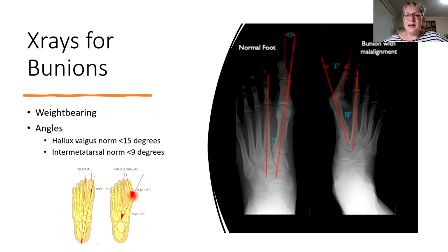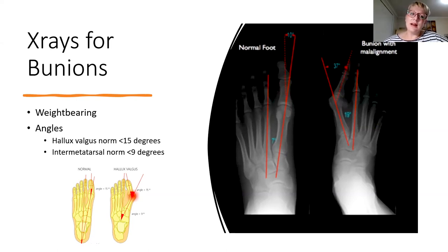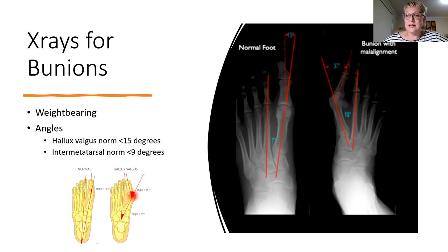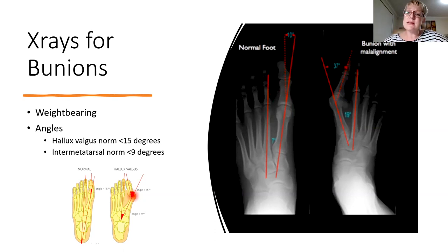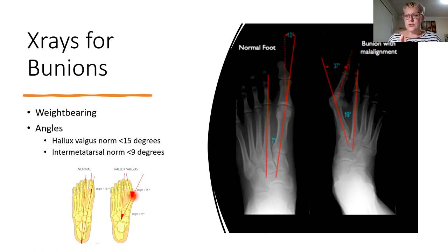Another important thing to take from these x-rays is that the first metatarsal joint and intermetatarsal angle is not perfectly straight. A lot of people with bunions want surgery because they want the joint to be completely straight, but that's not how it naturally occurs. Through surgery you can actually overcorrect, restrict the joint too much, and create a whole other set of problems including restricted range of movement. When I talk about bunion surgery, I emphasize being realistic about a reduction in the angle rather than expecting a perfectly straight joint.